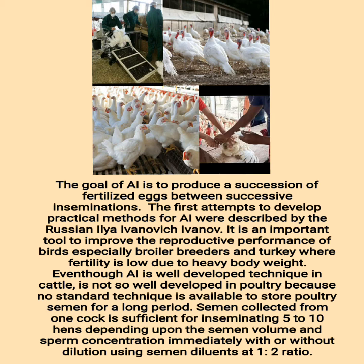Artificial insemination is a well-developed technique in cattle but is not so well developed in poultry because no standard technique is available to store poultry semen for a long period. Semen collected from one cock is sufficient for inseminating 5 to 10 hens depending upon the semen volume and sperm concentration, immediately with or without dilution using semen diluents at a 1:2 ratio.